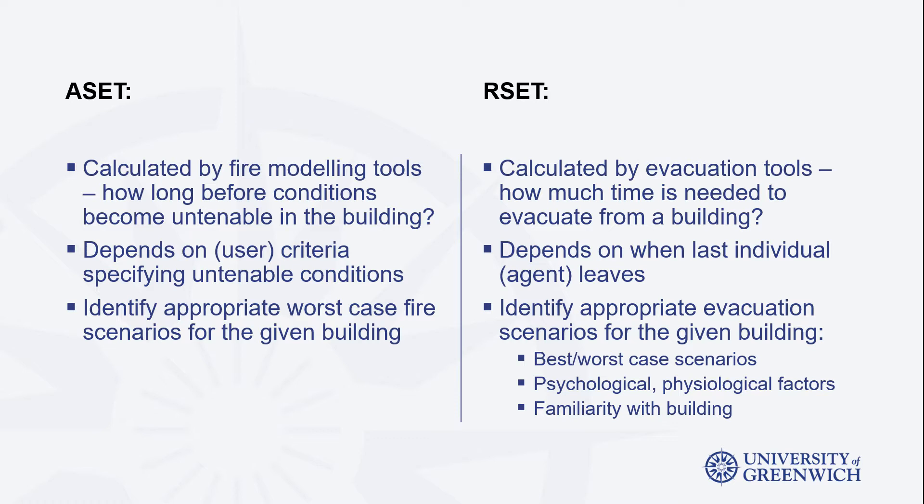For the first, the fire engineer would need to calculate the available safe egress time, or ASET, for specific fire scenarios of concern. These are normally calculated using a fire model, and the answer would equate to the minimum time that the conditions within a structure become untenable. The tenability limits within the structure are set by the user and could relate to specific temperatures being reached or to concentrations of toxic fire gases such as carbon monoxide.